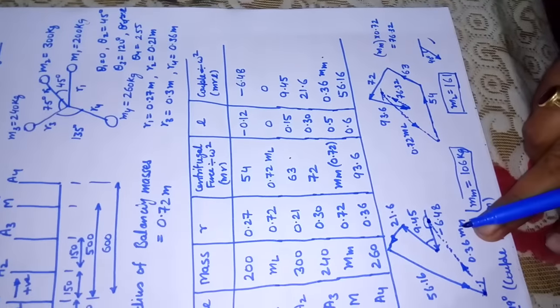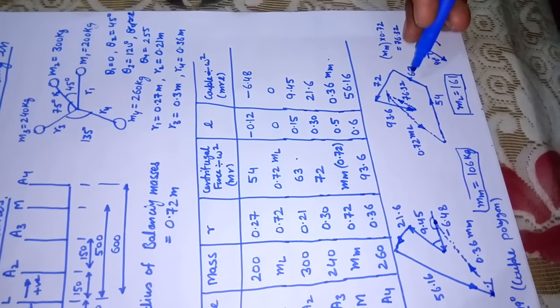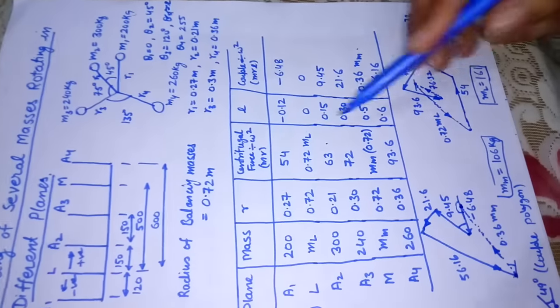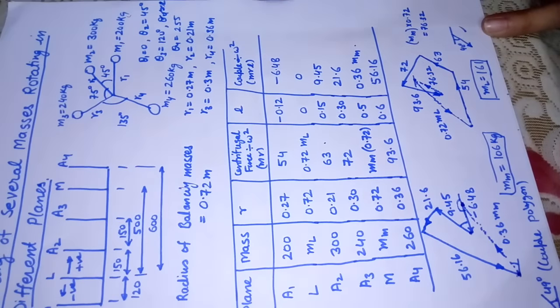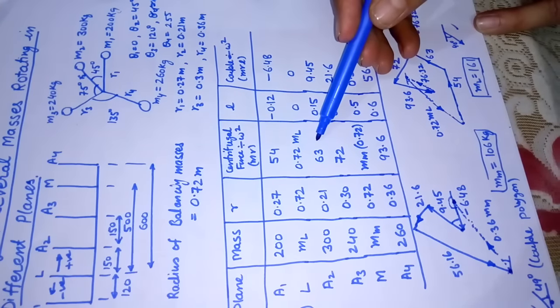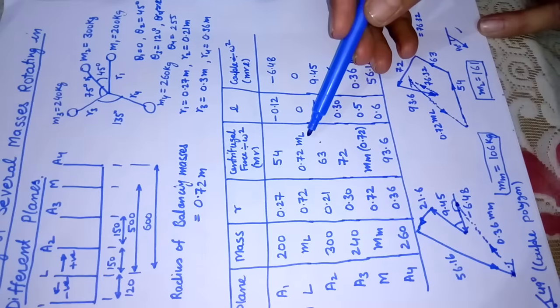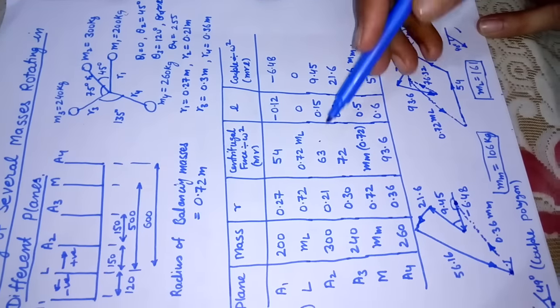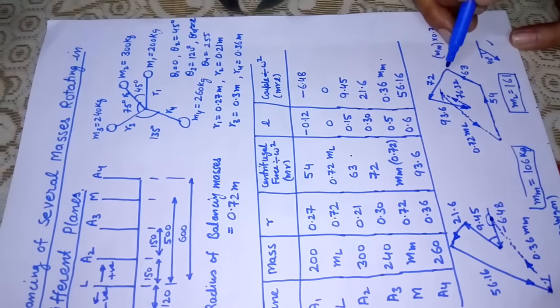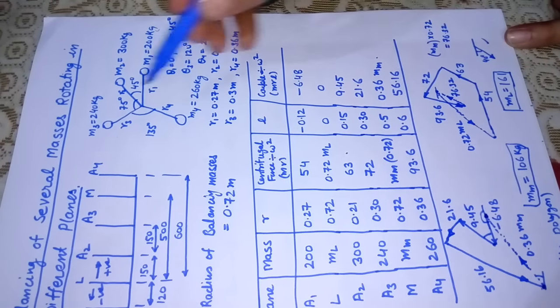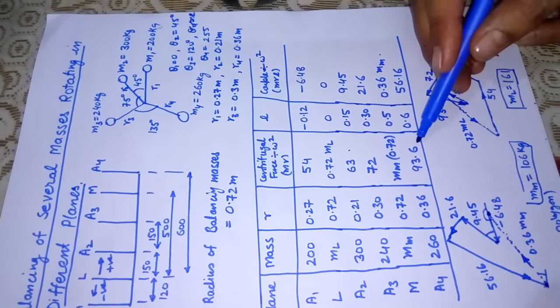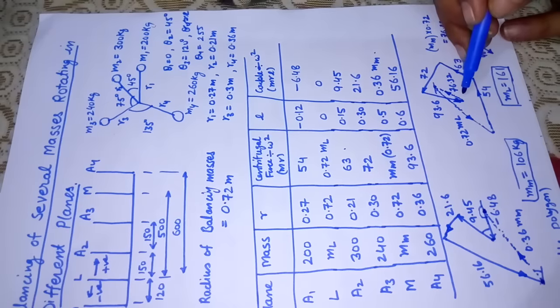After making this diagram, we'll go for the force polygon. We'll start with first one, 54, that is now positive, so it will be in the direction of this. Then after that we'll have 63. This is unknown, we'll keep it as the last side. We'll take 63 along the direction of m2. Then 72, that is a3 direction, parallel to this. Then 93.6, parallel to a4, all positive.